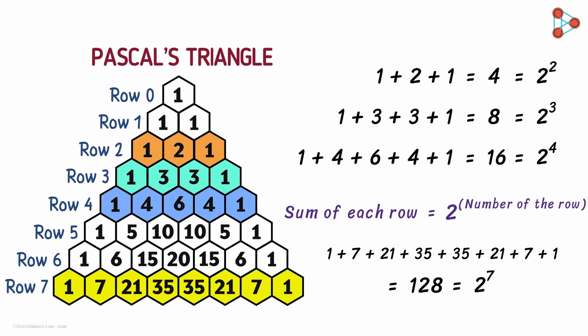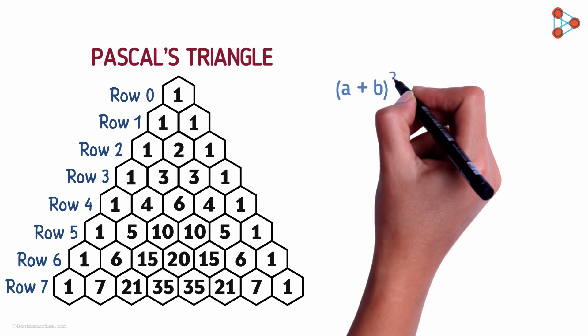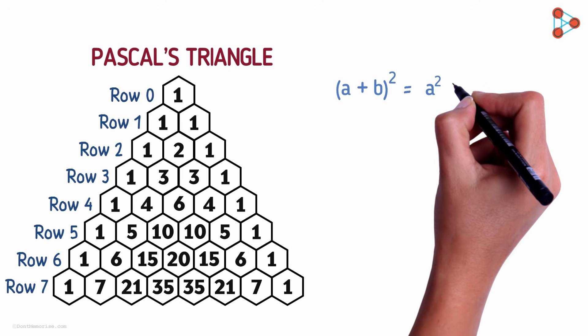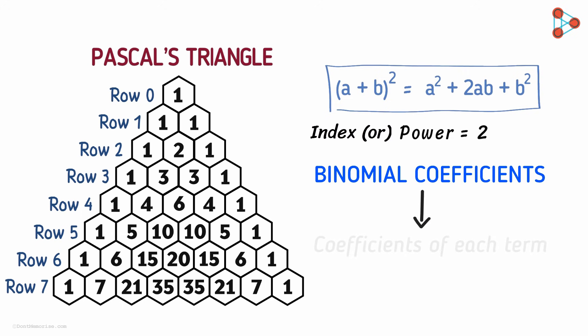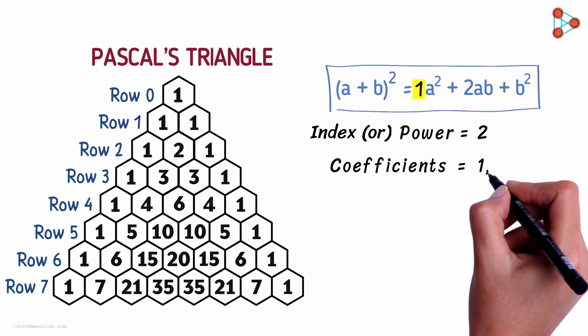So many patterns, right? But you may be wondering how will we use this Pascal's triangle in the binomial theorem? Let's see how. Can you tell me the formula of a plus b the whole squared? Yes, it's a squared plus 2ab plus b squared. Can you tell me what the power of the binomial here is? You're right, it's 2. This power is also called the index of the binomial. Now, before we proceed further, we need to know what binomial coefficients are. Binomial coefficients are the coefficients of each term in the expansion of the binomial. Can you tell me what the binomial coefficients here are? Yes, they are 1, 2 and 1.